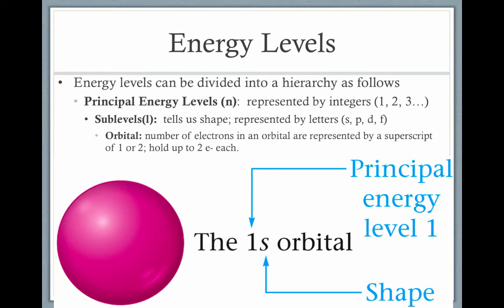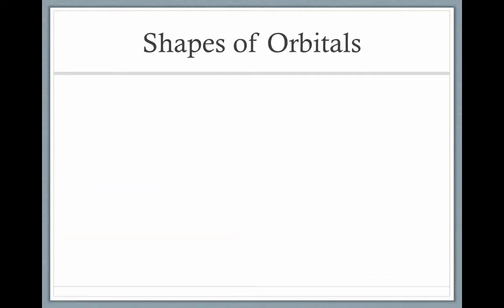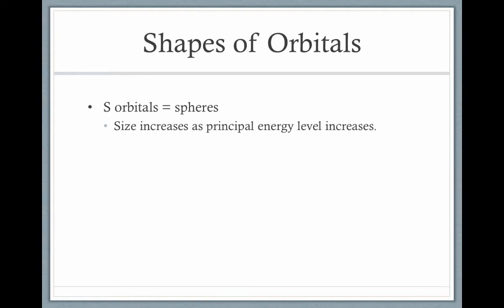Here we have a representation of the 1s orbital. It's called the 1s orbital because it's in the first principal energy level and it's an orbital that has the shape taken by shapes in the s sublevel. We can have a 2s orbital, which would look just like this but would be in the second principal energy level, so it would be a little bit bigger of a sphere. Likewise for the 3s orbital, the 4s orbital, and so on. We've already seen that the s orbitals are spheres, and their size increases as the principal energy level increases. So the 1s orbital is smaller than the 2s orbital, which is smaller than the 3s orbital. There is one s orbital in each s sublevel, and each s orbital can hold two electrons, for a total of two electrons in each s sublevel.